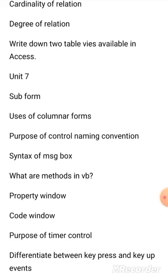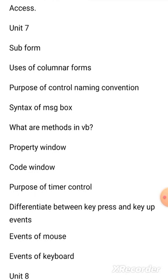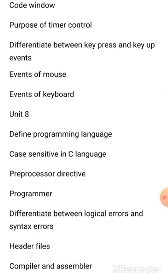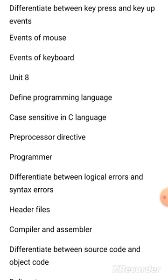Also from Chapter 7: code window, purpose of the timer control, differentiate between key press and key up events, events of mouse, and events of keyboard. From Chapter 8, mark these questions: define programming language, case sensitive in C language, preprocessor directive, programmer, differentiate between logical errors and syntax errors — this question is most repeated and most important.